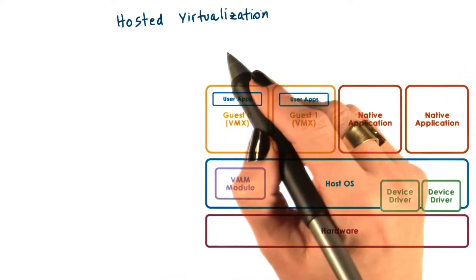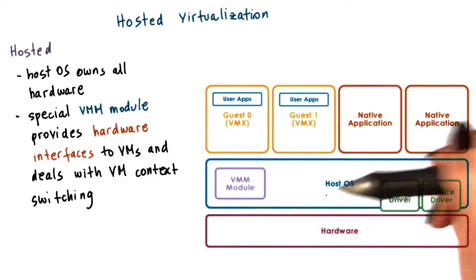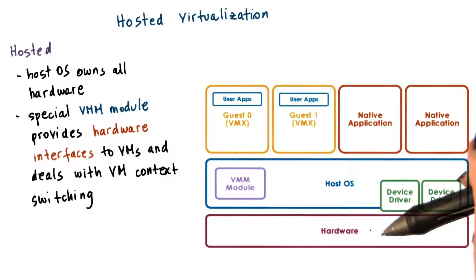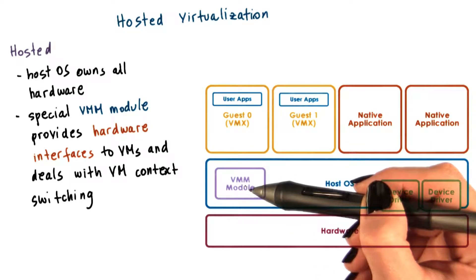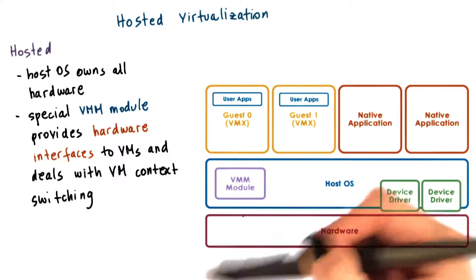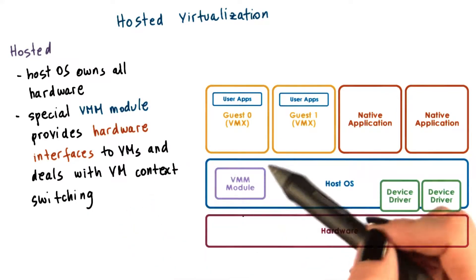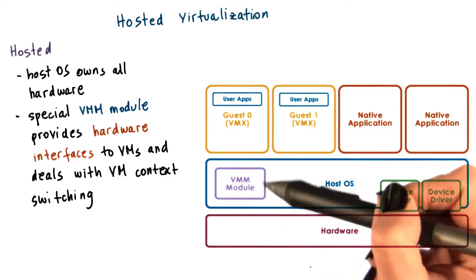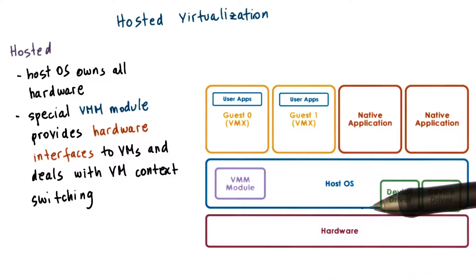The second model is called the hosted model. In this model, at the lowest level, there is a full-fledged host operating system that manages all of the hardware resources. The host OS integrates a virtual machine monitor module that's responsible for providing the virtual machines with their virtual platform interface and for managing all of the context switches, scheduling, etc. As necessary, this VMM module will invoke drivers or other components of the host operating system as needed.